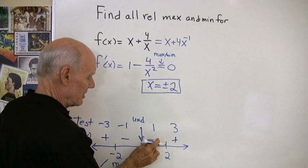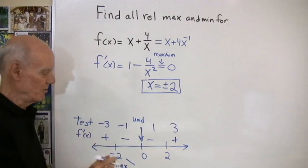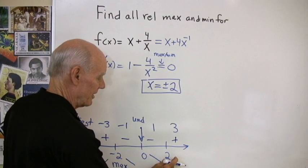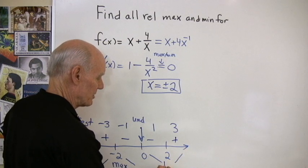Here, the first derivative is negative. That means the graph is decreasing, so it's going down, levels off at x equals 2, and then goes back up. So that means this must be a minimum.